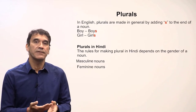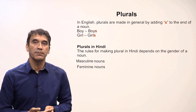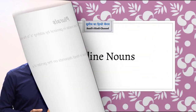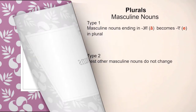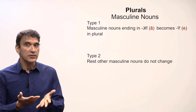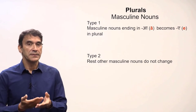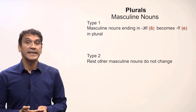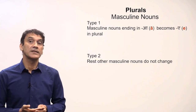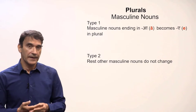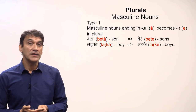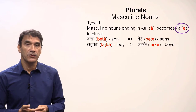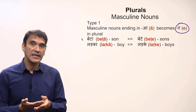The masculine nouns have different rules for making plurals than feminine nouns. There are two types of masculine nouns: the masculine nouns that end in 'a', and the masculine nouns that do not end in 'a'. The masculine nouns that end in 'a' change their ending to 'e' in the plural.